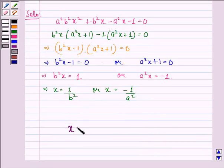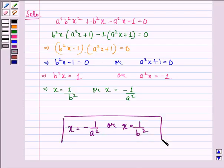So, our answer to this question is x is equal to minus 1 upon a square or x equals to 1 upon b square. This is our answer to this question. I hope that you understood the solution and enjoyed the session. Have a good day.